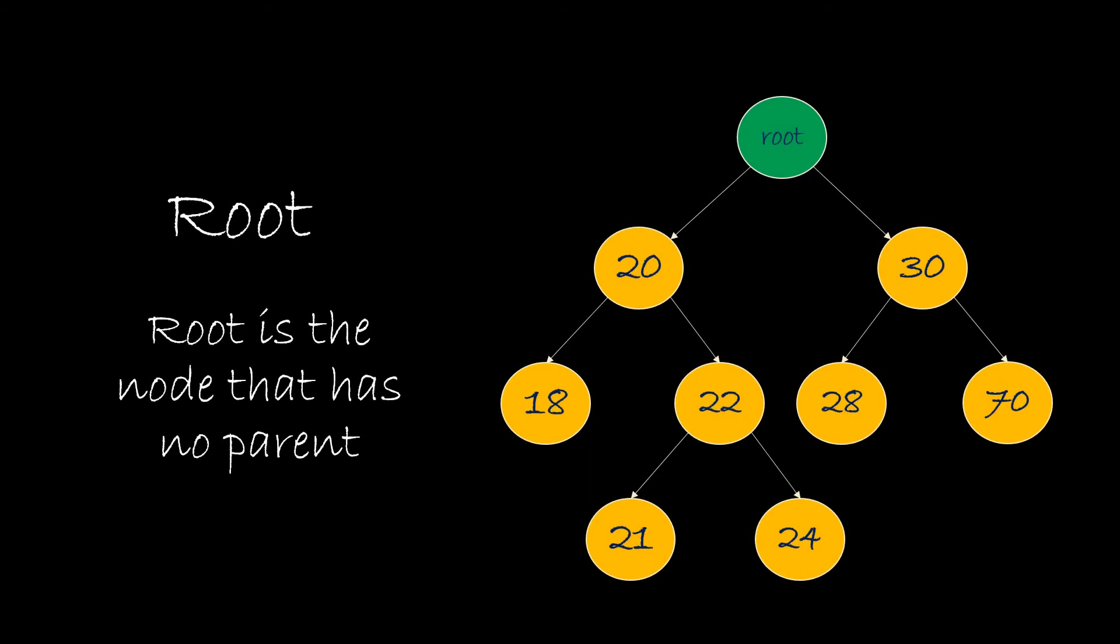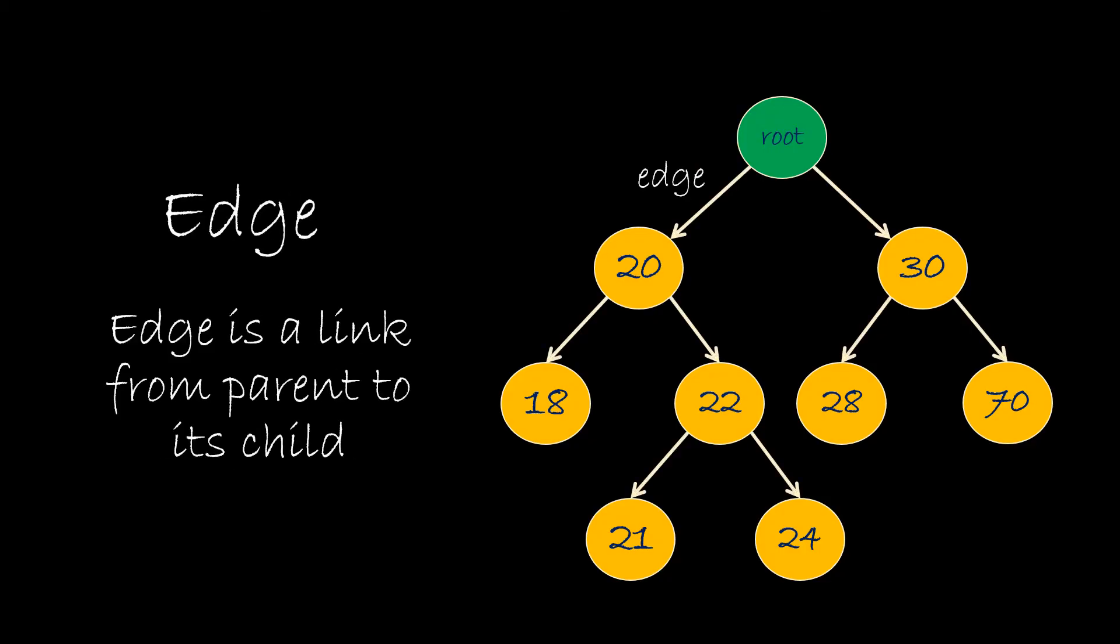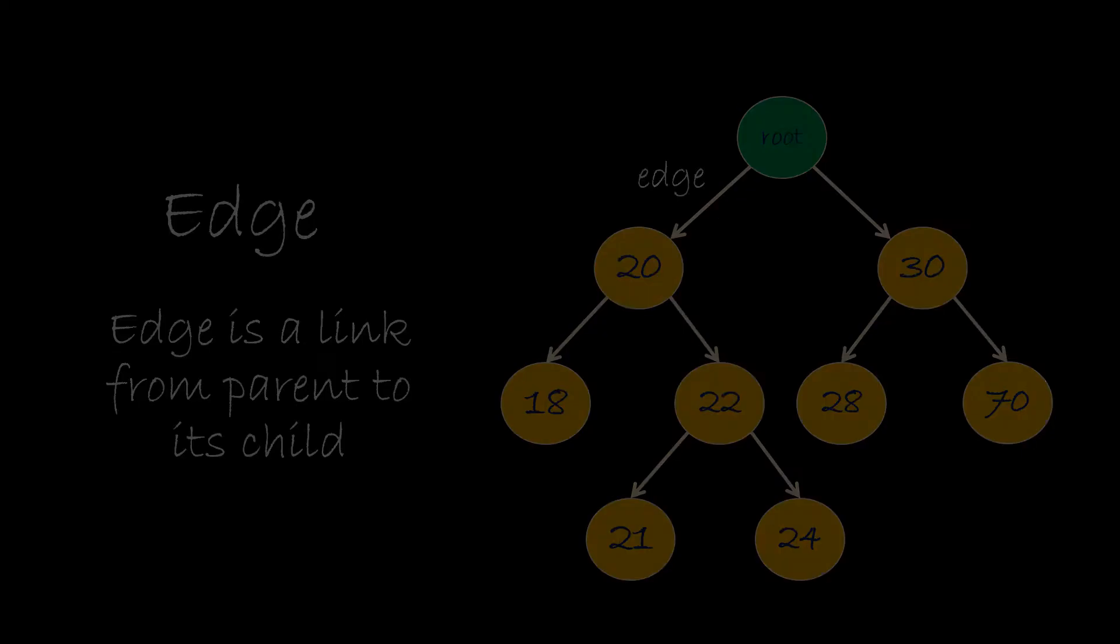If we take the example of organizational structure, CEO will be at the root as he or she does not report to anybody. An edge is a link that connects the parent node with the child node.